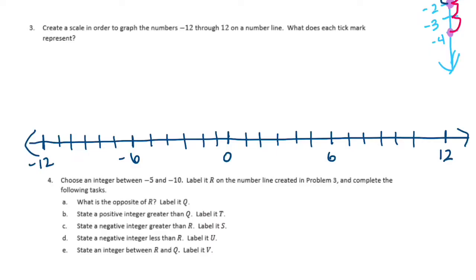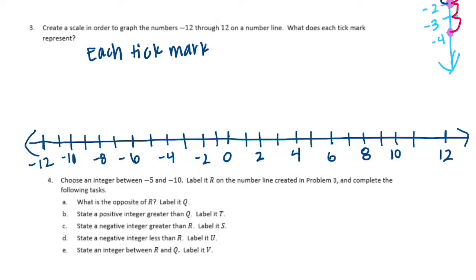Instead of cluttering it with 1 through 12, I'm going to count by 2s. So we have 2, 4, 6, 8, 10, 12, negative 2, negative 4, negative 6, negative 8, negative 10, and negative 12. So we have a scale here. Each tick mark represents 1 unit — not 2 or 3, just 1, even though we labeled every other tick.